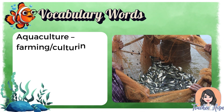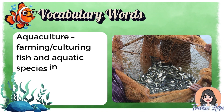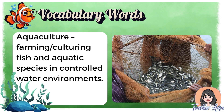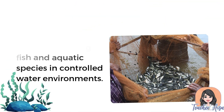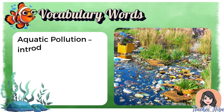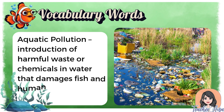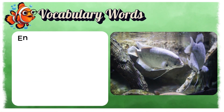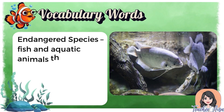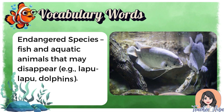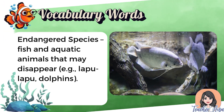Here are some vocabulary words for us to remember. Aquaculture means farming or culturing fish and aquatic species in controlled water environments. Aquatic pollution is the introduction of harmful waste or chemicals in water that damages fish and humans. Endangered species are fish and aquatic animals that may disappear, for example, lapu-lapu and dolphins.